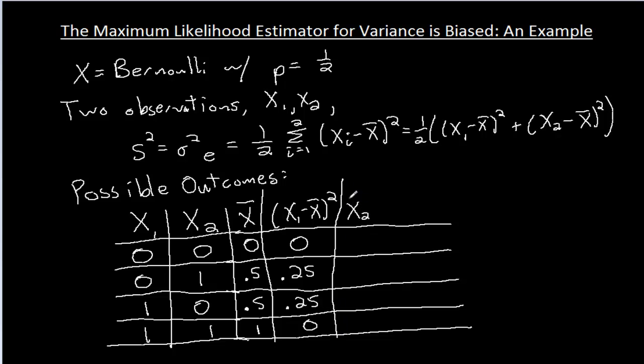Okay, and then we do (x2 minus x-bar)². What I'm doing is I'm going to find an expectation for this expression. x2 minus x-bar squared, well again, x2 and x-bar is zero for that first case, so that's zero. I got one minus 0.5, that's 0.25. Zero minus 0.5, take that and square it, that's 0.25. And then one minus one squared is zero.